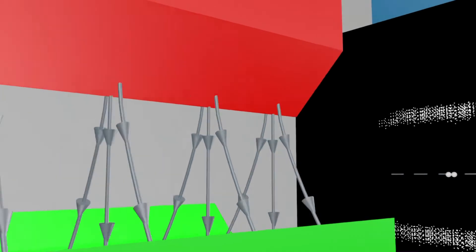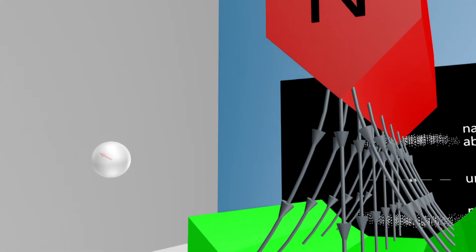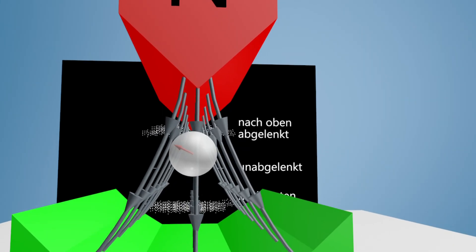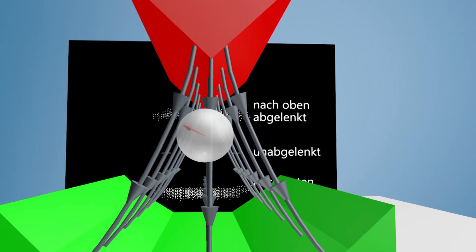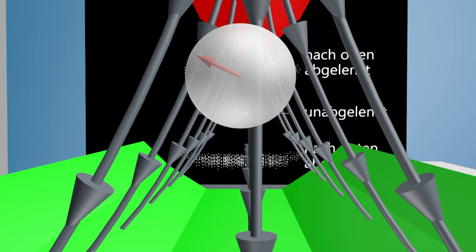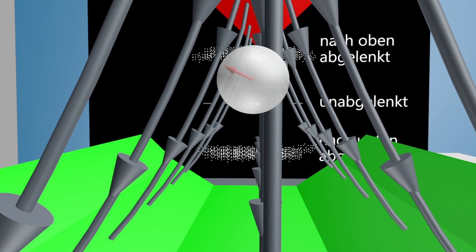But the silver atom has an unpaired electron. If this enters the magnetic field, it aligns itself either in the direction of the north pole or in the direction of the south pole. The most important thing is the alignment before entering the magnetic field.